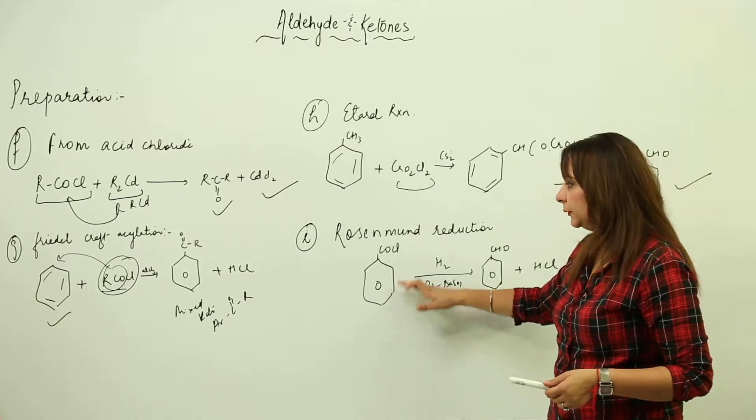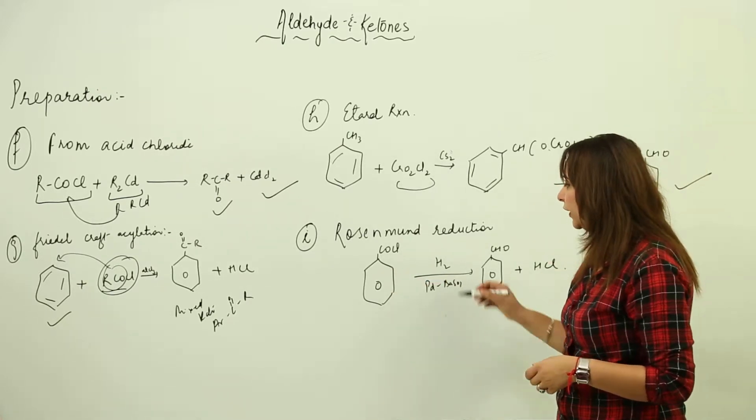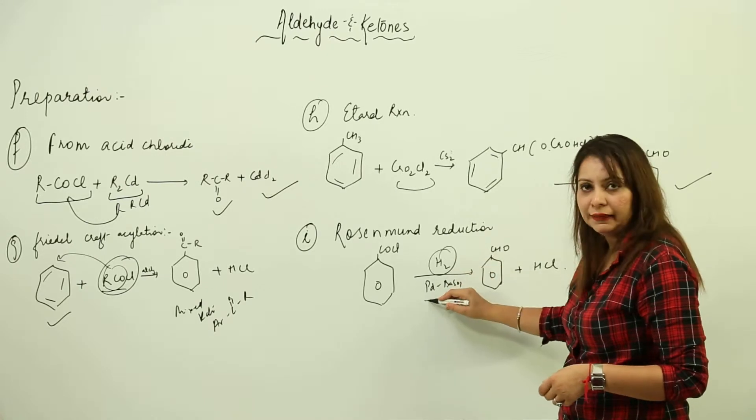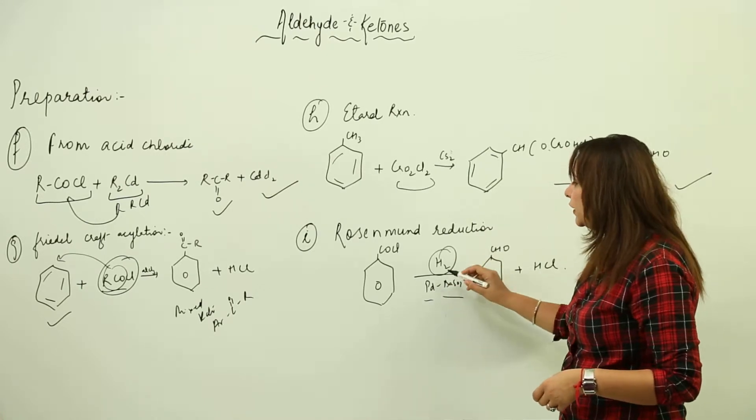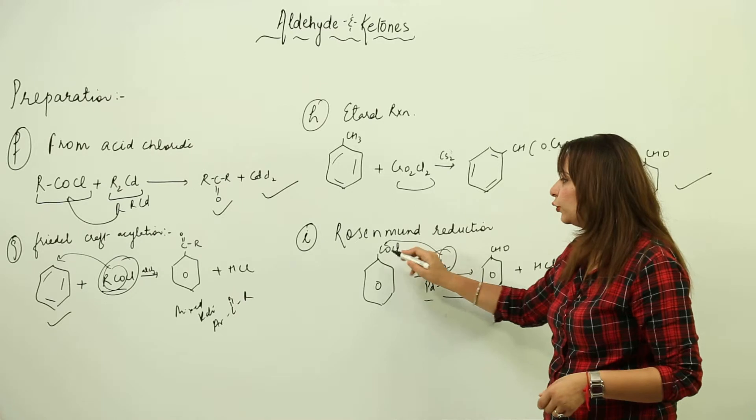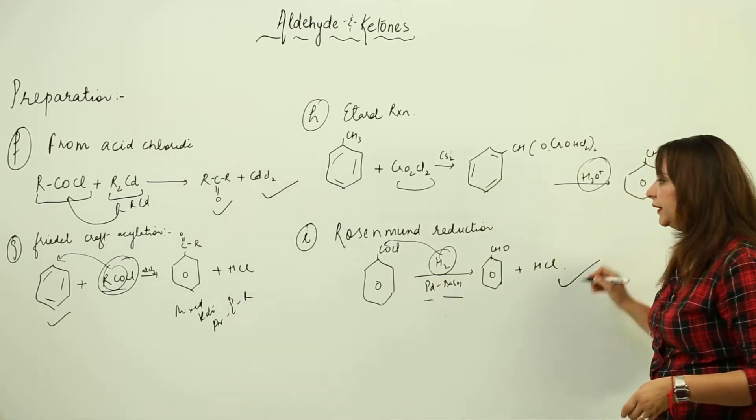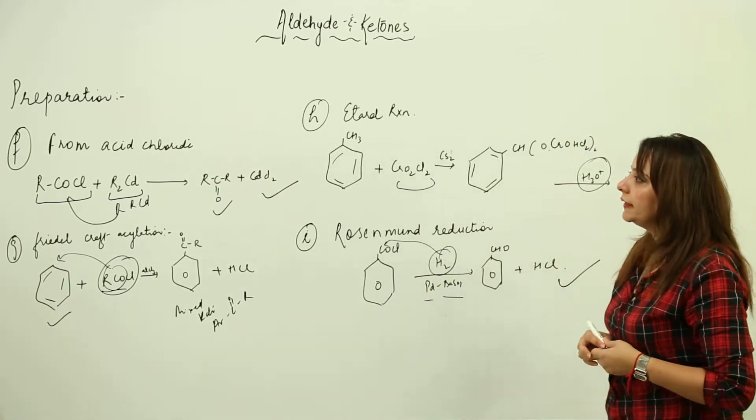Here we have acid chloride, we're carrying out reduction in presence of palladium BaSO4. When you do it, it forms CHO group here and HCl gets liberated.